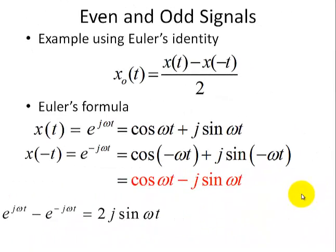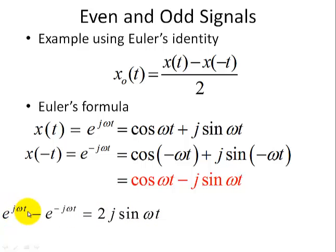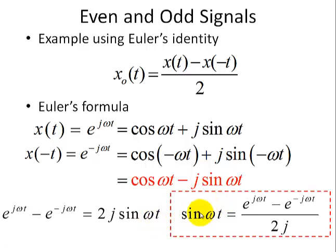We do the same thing for sine, but this time we subtract the equations. The cosines go away and we add up two sine terms, giving us 2j sine omega t. On the left side we have e to the j omega t minus e to the minus j omega t. Solving for sine omega t, we get another form of Euler's identity: sine omega t equals e to the j omega t minus e to the minus j omega t, divided by 2j.